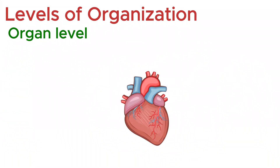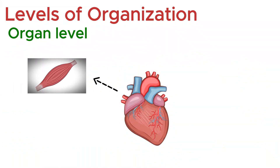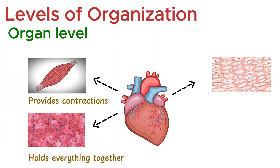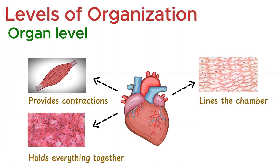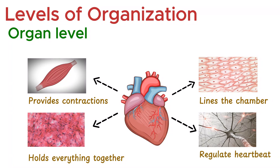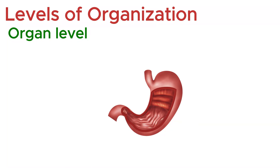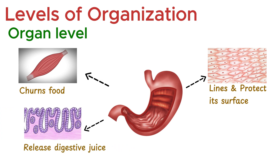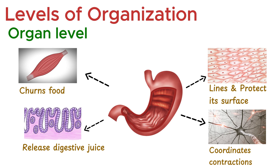Take the heart, for example. Muscle tissue provides the contractions that pump blood, connective tissue holds everything together, epithelial tissue lines the chambers, and nervous tissue regulates the heartbeat. Without this teamwork, the heart could not function. Another example is the stomach: its muscle tissue churns food, epithelial tissue lines and protects its surface, glandular tissue releases digestive juices, and nervous tissue coordinates contractions.